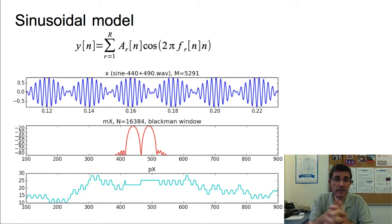The sine model is simple. It's a sum of time-varying sinusoids. In the previous class we emphasized that we need to detect these sinusoids in the frequency domain. Therefore we need to choose a window size that is good enough to isolate those sinusoids or at least have separate peaks for these sinusoids. In this particular case, these two sinusoids 440 and 490 hertz, we need a window size of 5291 samples to have these two main lobes separate.